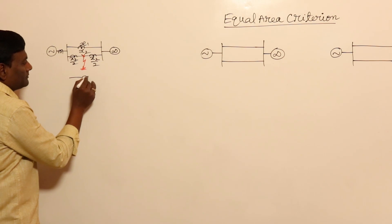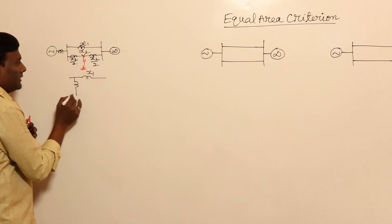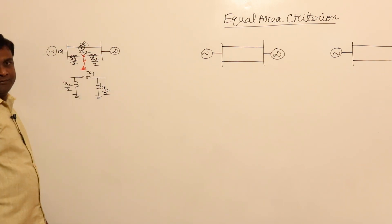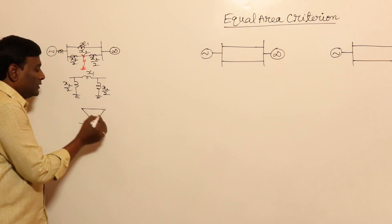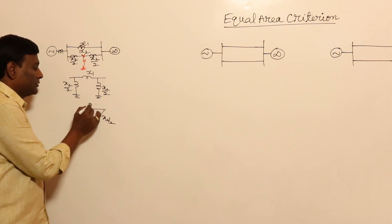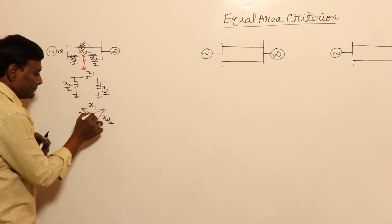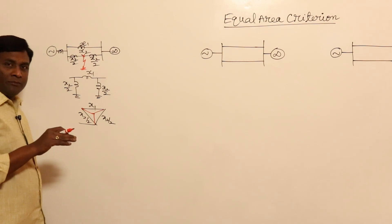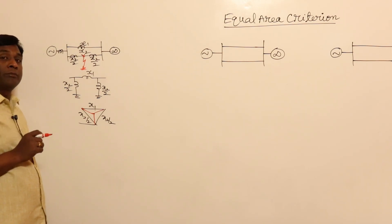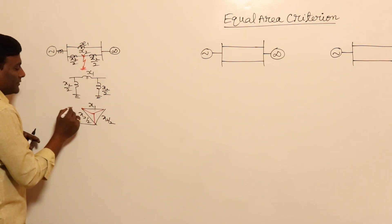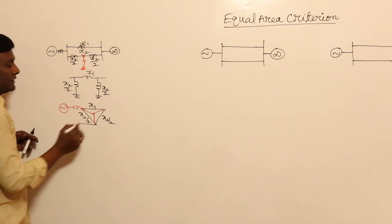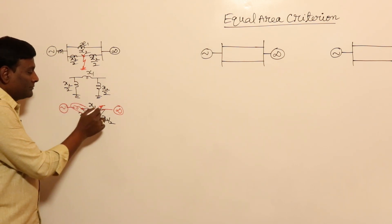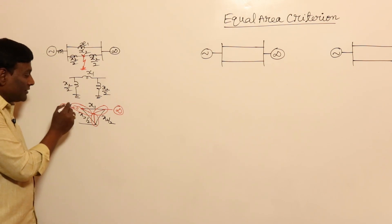The equivalent is going to be x1, x2 by 2, and x2 by 2 — this equivalently forms a delta configuration. So in this delta, one side is x2 by 2, another is x2 by 2, and the third is x1. We have to convert this into an equivalent star. The star-delta conversion question may not come directly, but if they give P_max values — P1 max, P2 max, P3 max — problems can be set. Once converted to star, you then convert that star back into an equivalent delta.